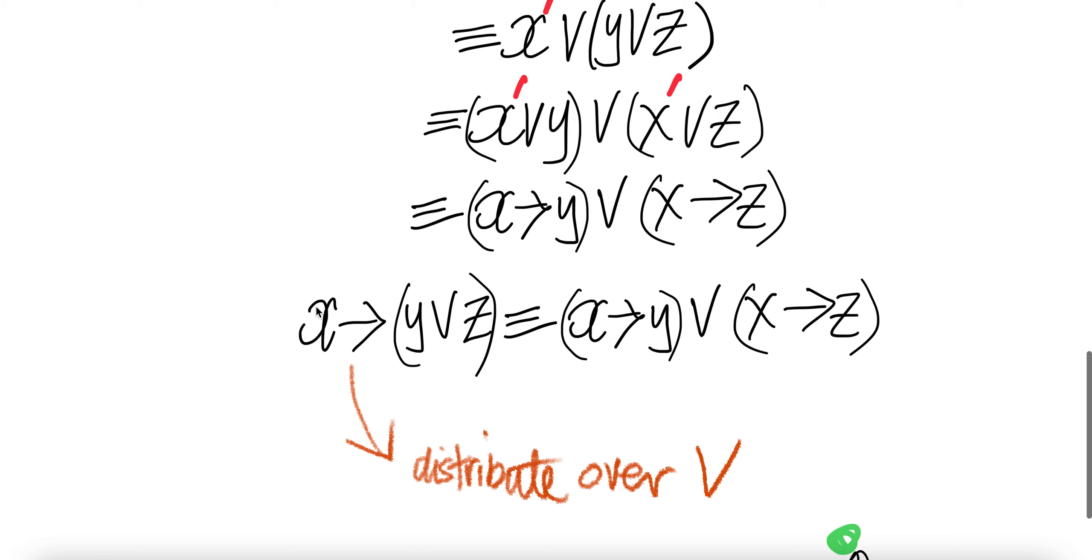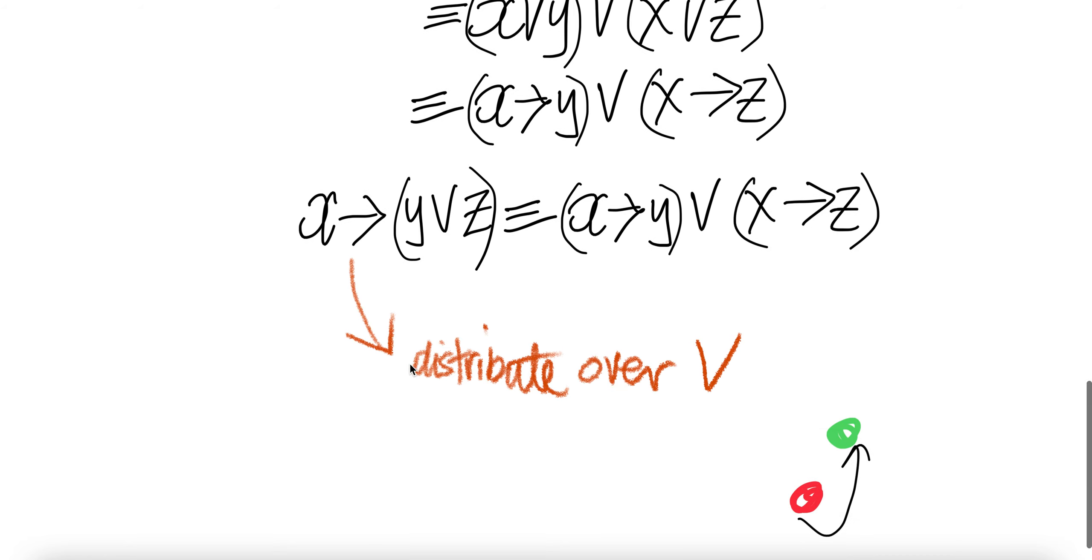Therefore, we have shown x imply y or z is equivalent to x imply y or x imply z, i.e., implication distributes over or. Done.